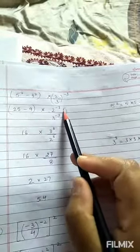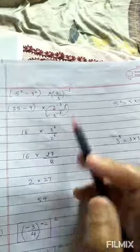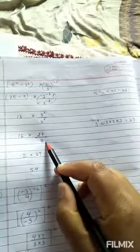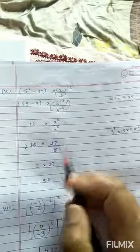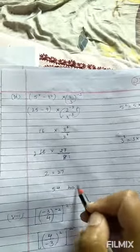This 3 raised to the power minus 3 I have taken up and this I have brought down, clear. So 3, 3, 3 is 27, and 2, 2, 2, 2, 2 will give you 8. Clear. Now 8 ones are 8, 8 twos are 16, and 2 into 27 will give you 54. Clear, this is your answer.